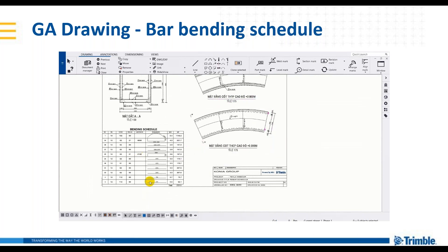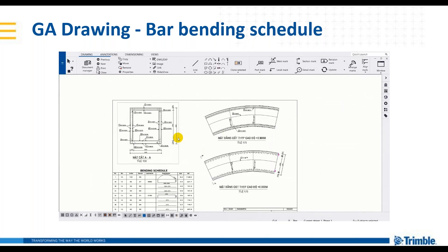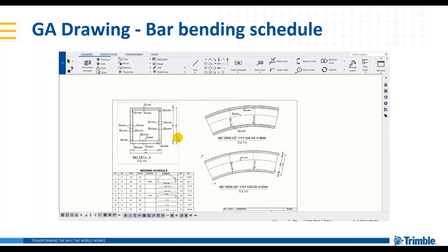Như vậy là chúng ta đã có một cái bản vẽ cốt thép của một đoạn kênh cong có đầy đủ mặt bằng, mặt cắt và bảng thống kê. Chúng ta có thể customize thêm bằng cách đưa về việt hóa hoặc thêm các thước, thì các bạn có thể tùy chỉnh biên tập thêm. Trên đây là nội dung trình bày của tôi về cái buổi hội thảo trực tuyến về thiết kế mô hình chi tiết với kênh cong đối với Tekla, phần 2 phần xuất bản vẽ khối đổ và bản vẽ cốt thép có bảng thống kê cốt thép. Tôi rất là cảm ơn các anh chị đã tham dự buổi hội thảo trực tuyến của công ty Clear. Chúng tôi sẽ ghi lại cái buổi trực tuyến này bằng cái video mà chúng tôi sẽ gửi cho các anh chị qua email và đăng lên kênh YouTube của công ty chúng tôi. Xin chào và hẹn gặp lại các anh chị đã tham gia.